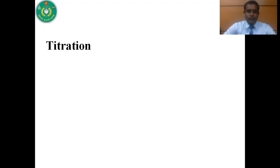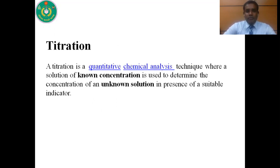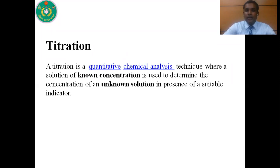So now, what is titration? Titration is a quantitative chemical analysis technique where a solution of known concentration is used to determine the concentration of an unknown solution in presence of a suitable indicator. What is indicator? Indicator is a substance that indicates whether a substance is acidic, basic, or neutral. But in the case of titration, the indicator indicates the end point of the reaction.